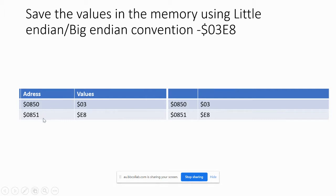The memory progresses from address 50 to 51. The information we want to save is 0x03E8. The little endian convention, shown on the left, stores the least significant byte first, followed by the most significant byte.